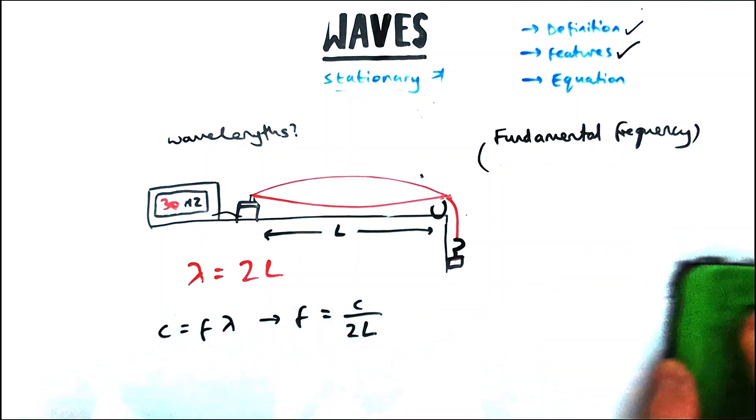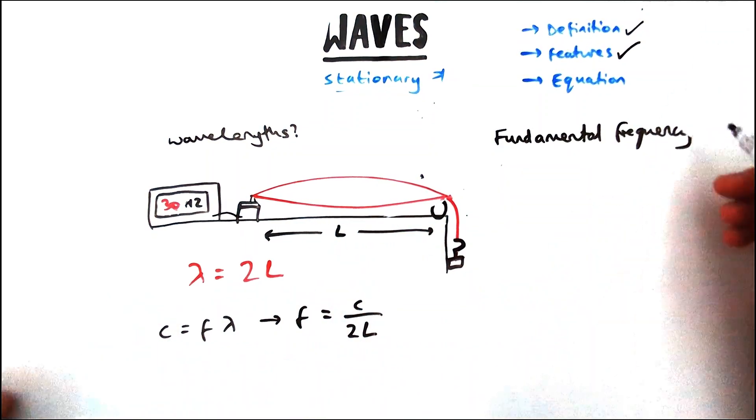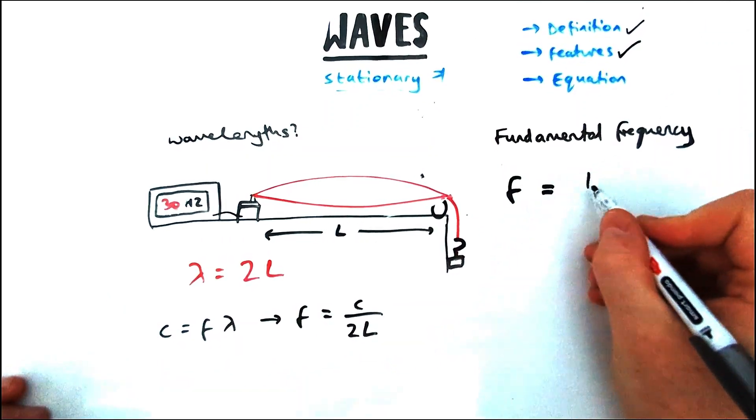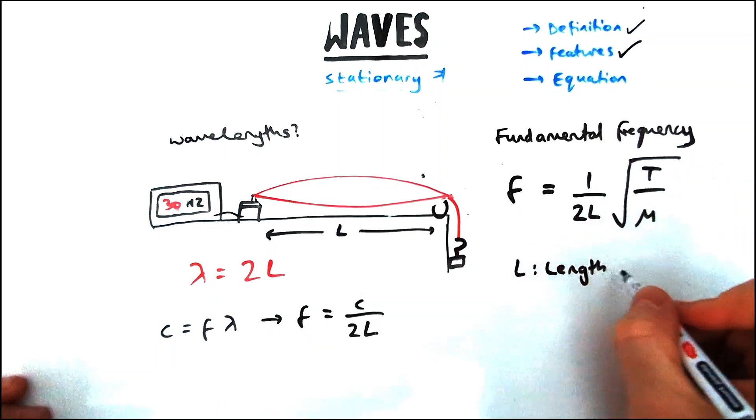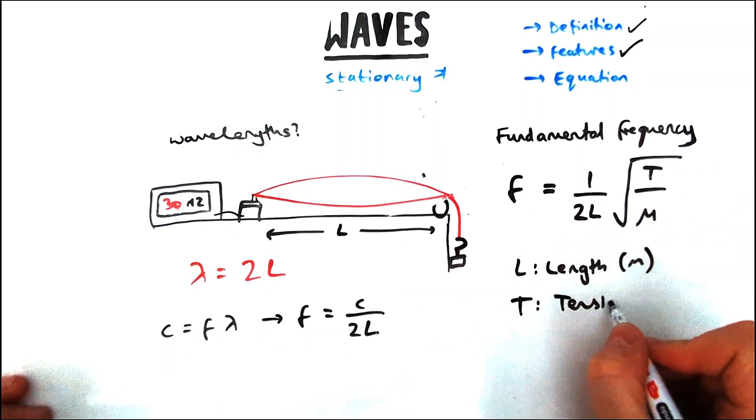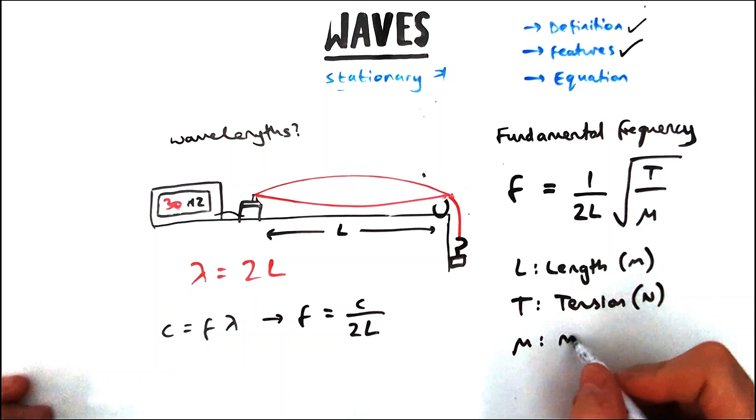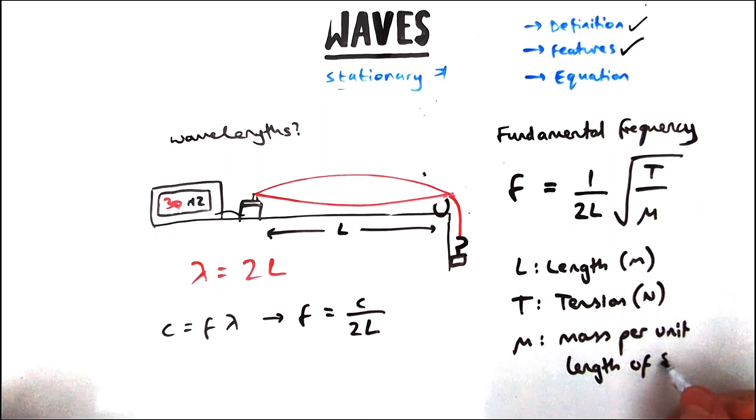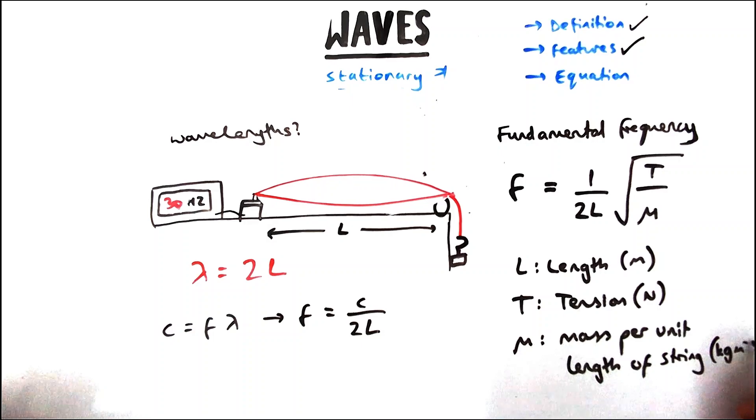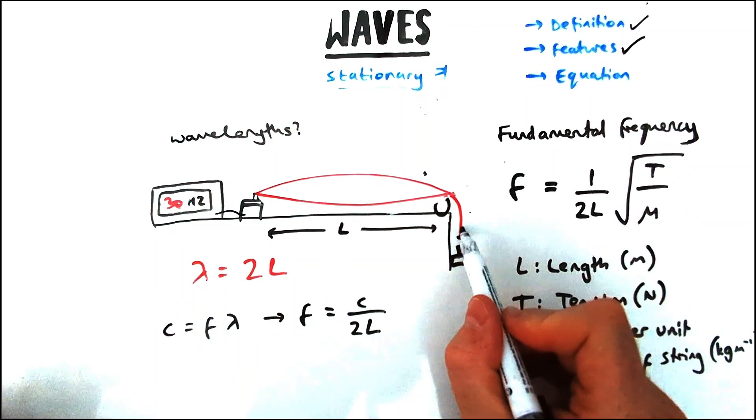There is a big long equation to work out the fundamental frequency of our stationary waves and it looks a bit like this. So frequency equals one over two L, where L is the length, all in the square root tension divided by mass per unit length. So tensions, a force measured in newtons, mass per unit length is in kilograms per meter. The tension is provided by the weights at the end, so almost always that's going to be mg with this particular setup.